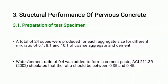Now we will see the structural performance of pervious concrete. First we check the compressive strength, and for that we will see how to prepare a specimen. Eight cubes were prepared for a ratio of 6 coarse aggregate to 1 cement, and again eight cubes were prepared for a ratio of 10 coarse aggregate to 1 cement. So a total of 24 cubes were produced and the water-cement ratio used is 0.4.